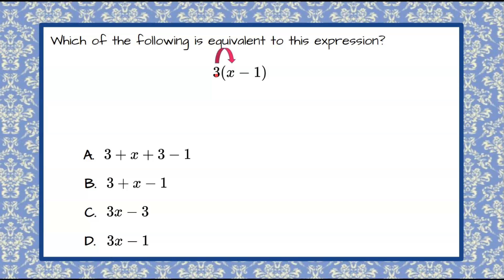So we're going to take 3 and multiply it to the first term so 3 times x has a product of 3x. Now we're going to take 3 and multiply it to the second term which is negative 1. 3 multiplied by negative 1 has a product of negative 3 and in simplest form this expression is 3x subtract 3.